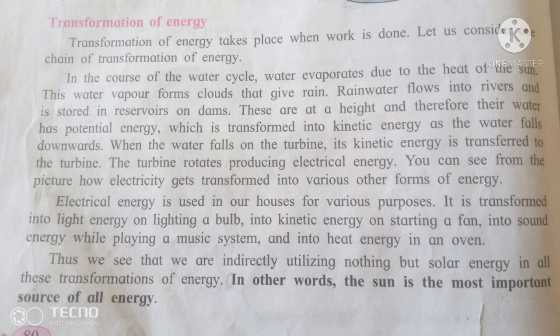The turbines rotate and produce electrical energy. You can see from the pictures how electricity gets transferred into various other forms of energy. In our houses, electrical energy is transferred into light energy when lighting a bulb, into kinetic energy when starting a fan, into sound energy while playing a music system, and into heat energy in an oven. We are thus directly utilizing solar energy in all these transformations, and the sun is the most important source of energy.